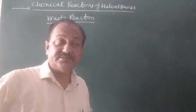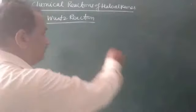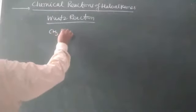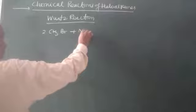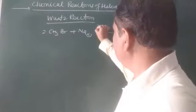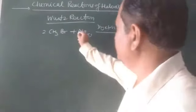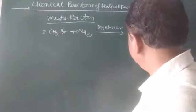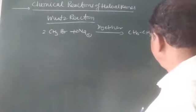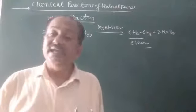Another reaction with metals is the Wurtz reaction. When 2 moles of any haloalkane — for example CH3Br — are treated with sodium metal in dry ether, there is a simple coupling: 2 CH3Br + 2Na → CH3-CH3 (ethane) + 2NaBr. Such reactions are called ascending of series.